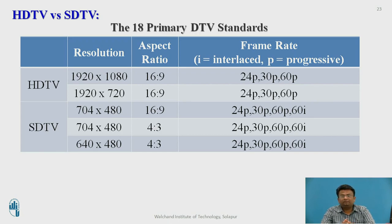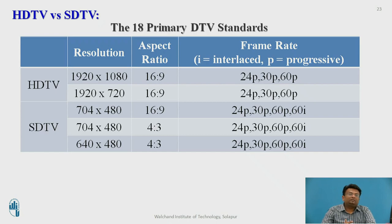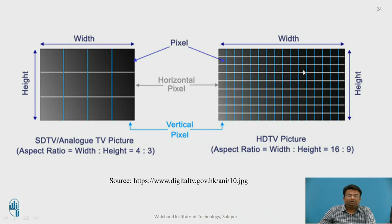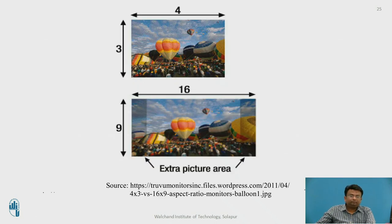SDTV versus HDTV: the difference is entirely about resolution and aspect ratio. SDTV has 480 pixels of vertical resolution, whereas HDTV has a maximum of 1080 pixels of vertical resolution and a 16:9 aspect ratio. HDTV has more horizontal and vertical pixels, so more information about the picture is available. The 16:9 width-to-height ratio provides more image information. A 4:3 picture compared to the same picture in 16:9 shows that the wider format gives more picture area for display.